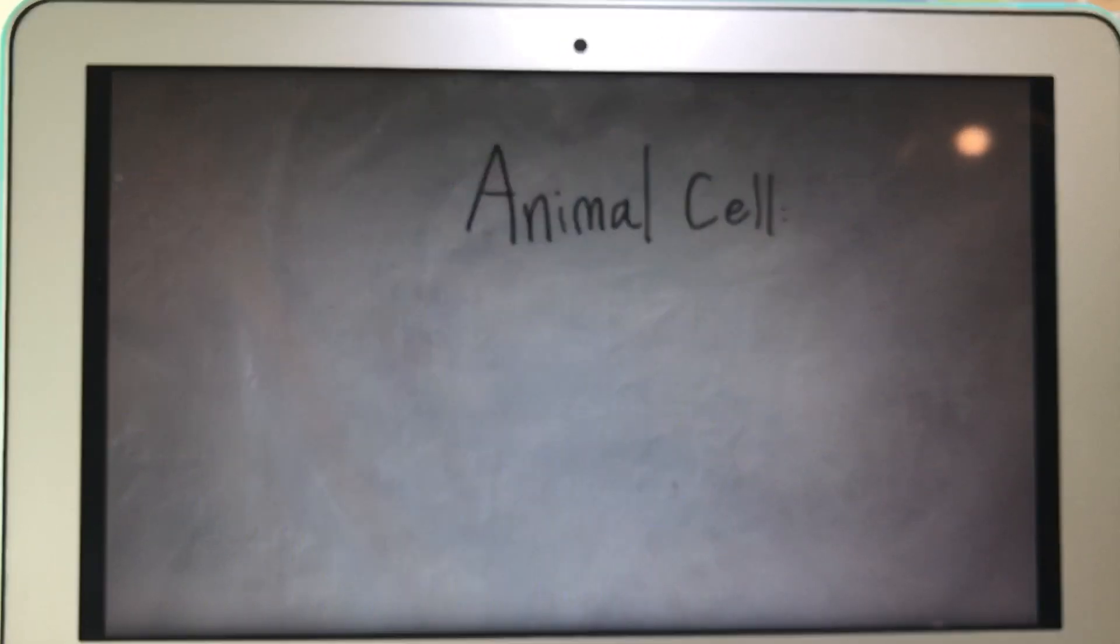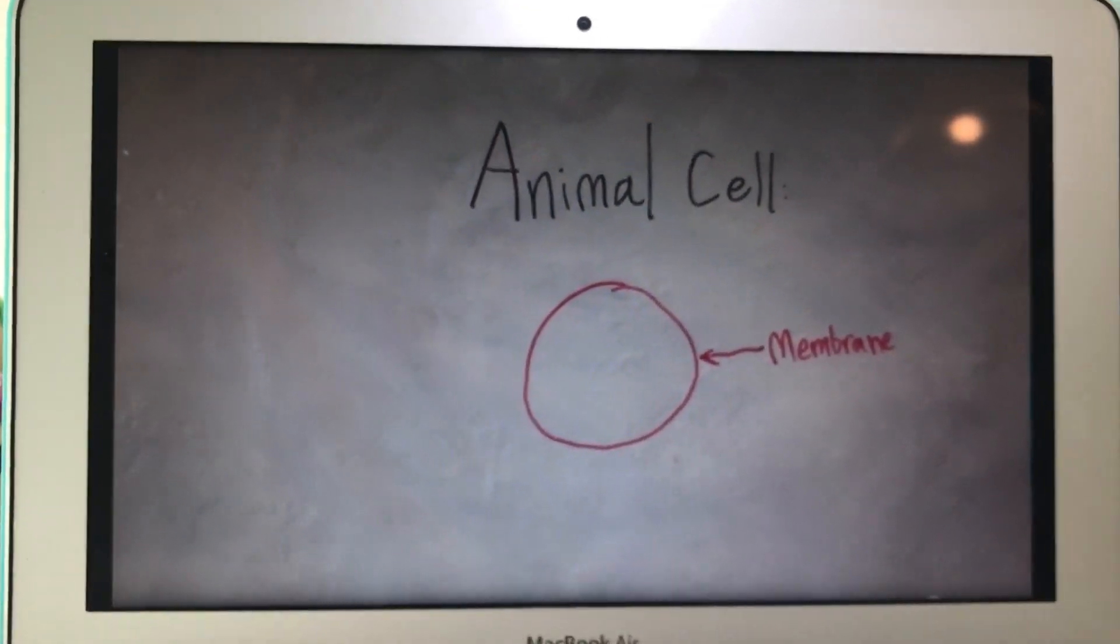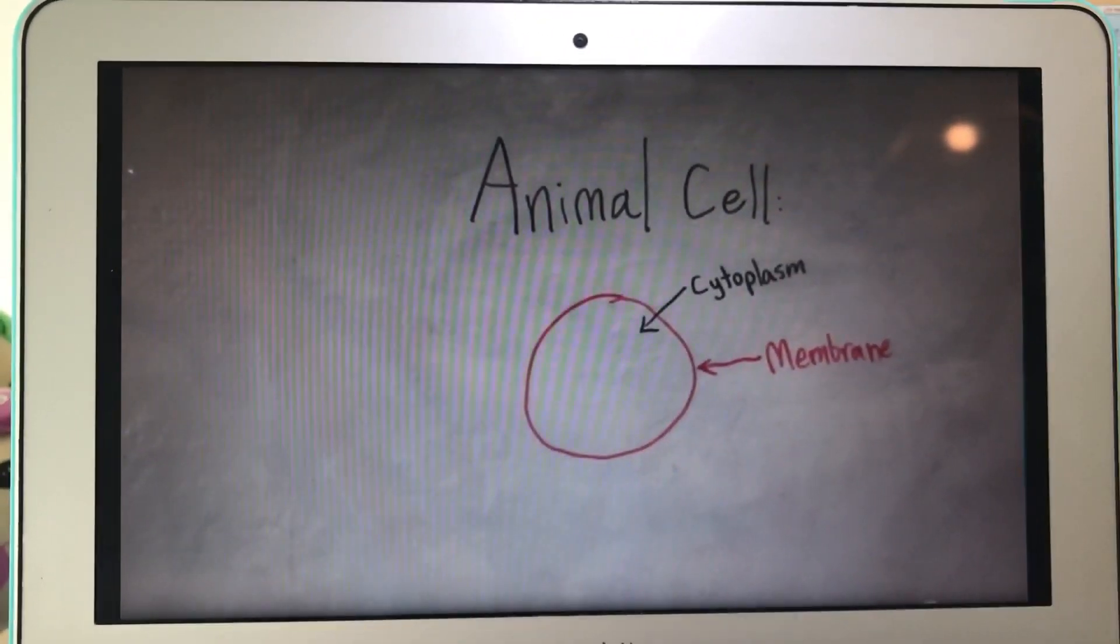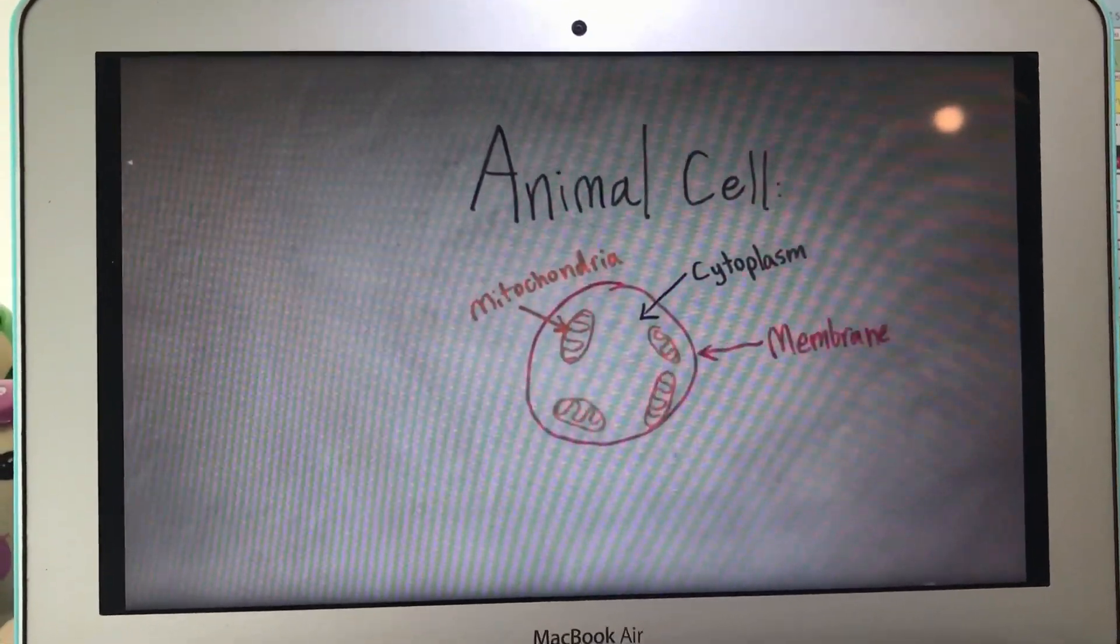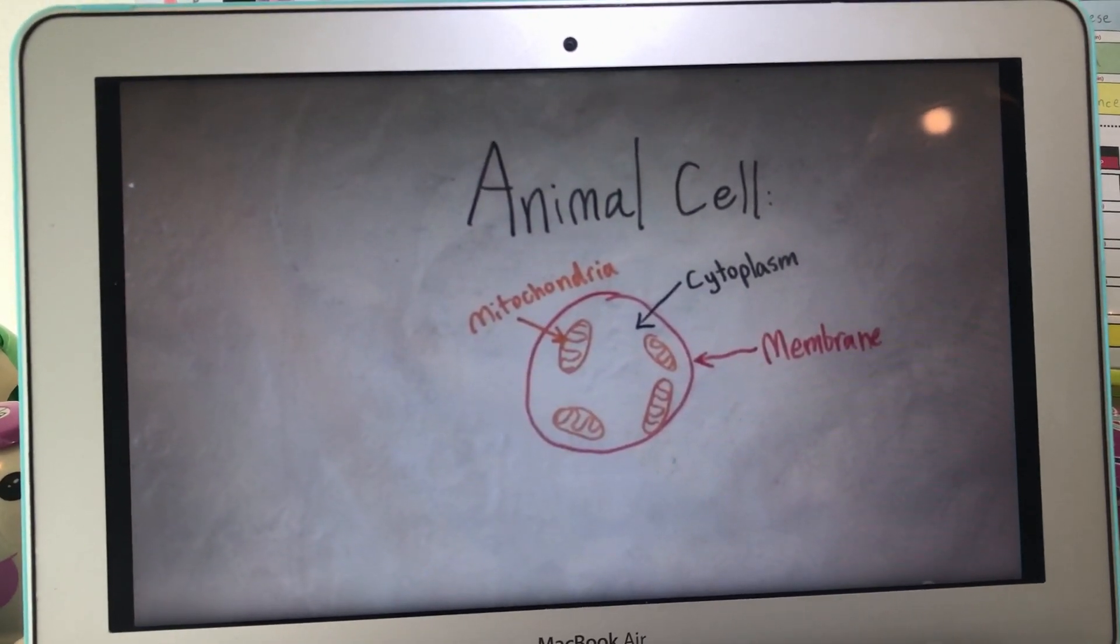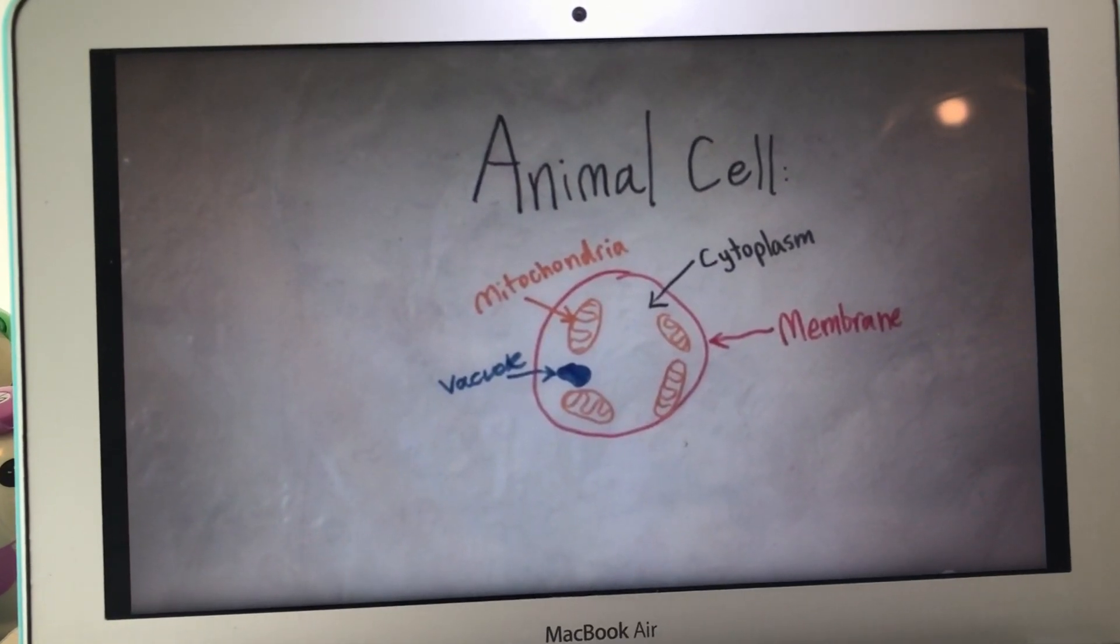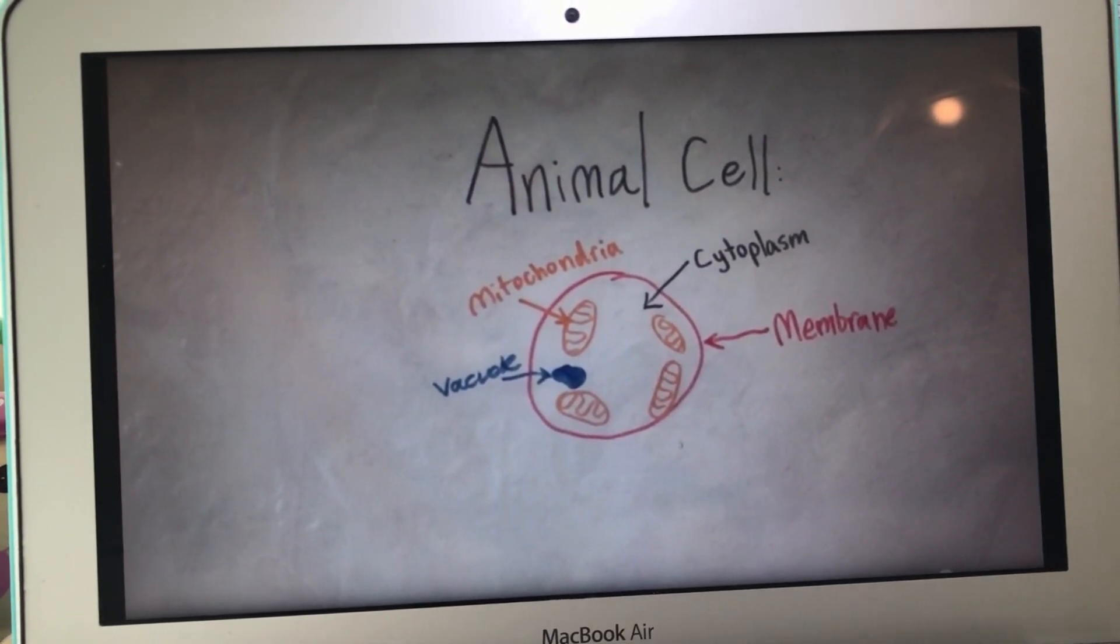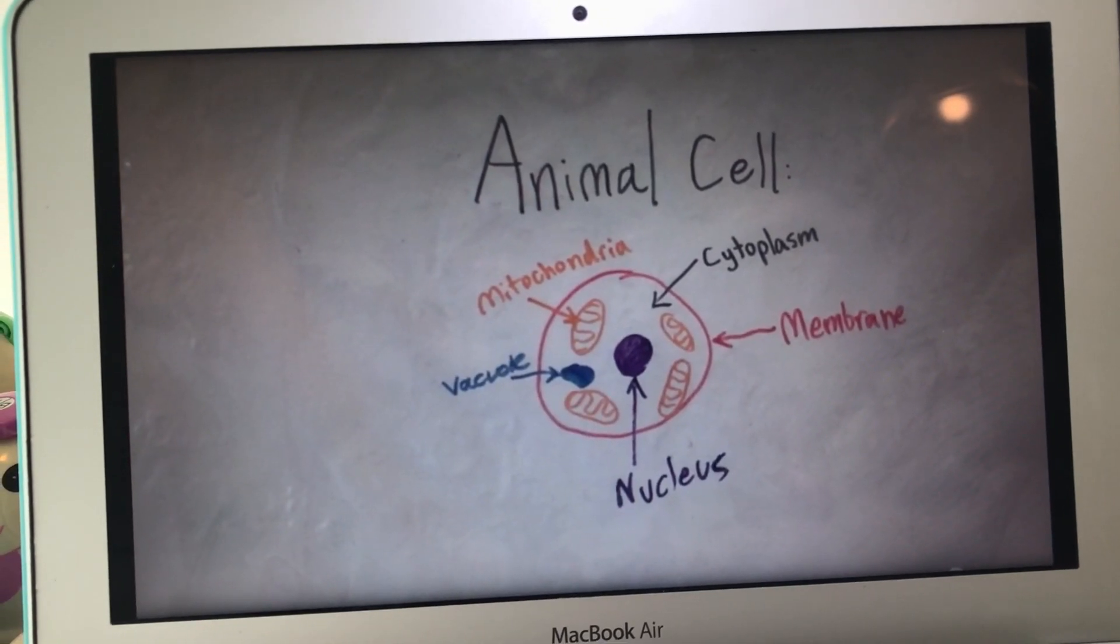Parts of an animal cell. It starts with the membrane. An animal has no cell wall. Then the cytoplasm. The mitochondria is especially important for respiration, as it is like a powerhouse, taking food and creating energy. The vacuole, although the animal's cell's vacuole is smaller, it is still needed. Finally, the big brain of the cell, the nucleus.